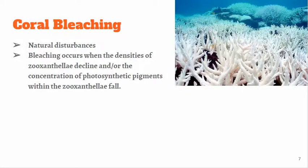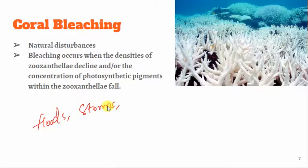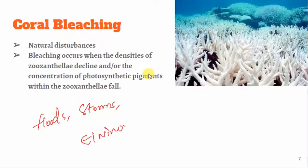Now let's talk about coral bleaching. Coral bleaching is a kind of damage that happens to coral reefs because of natural disturbances like violent storms, floods, high and low temperatures, El Niño, sub-aerial explosions, or predatory outbreaks. These kinds of natural disturbances actually lead to coral bleaching. Coral reef bleaching is a stress response of corals to disturbances — it shows that it is damaged, and the coral completely goes out of its color.